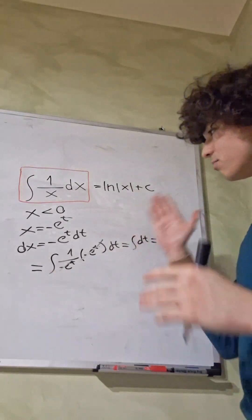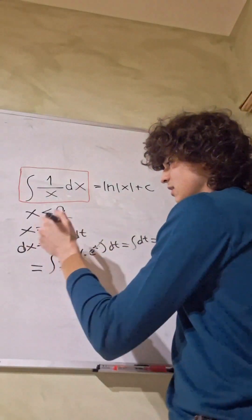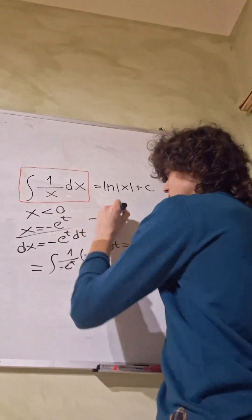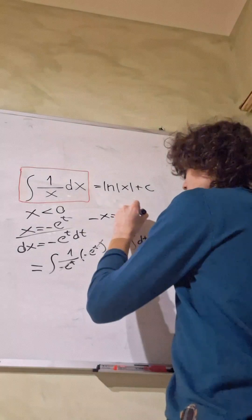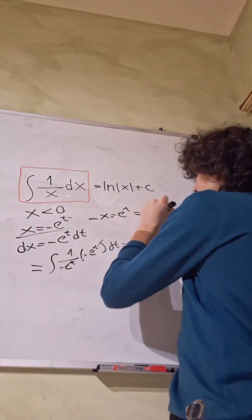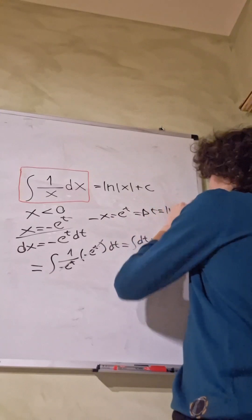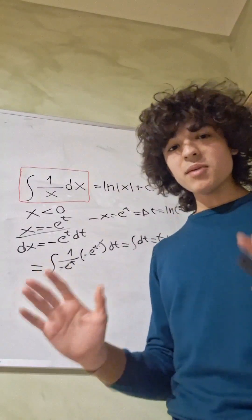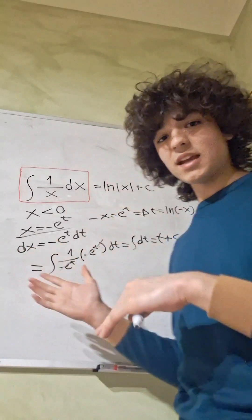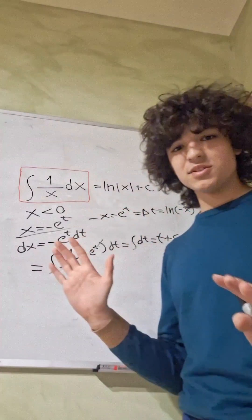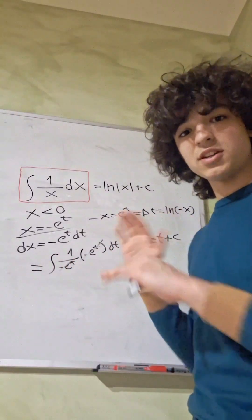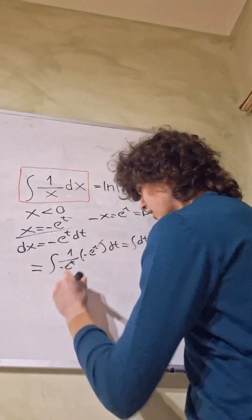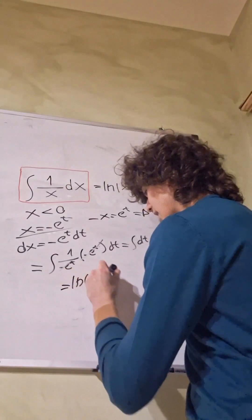Now what is t? Looking at our equation x equals minus e^t, we multiply both sides by minus one to get minus x equals e^t. Applying the natural log on both sides gives t equals the natural log of minus x. It might seem weird to take the natural log of minus x, but remember that x is negative, so negative times negative is positive. We're perfectly allowed to do this because the argument of the natural log function is positive. So this is the natural log of minus x plus c.